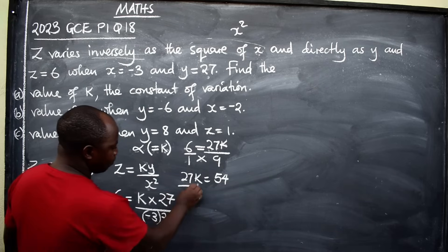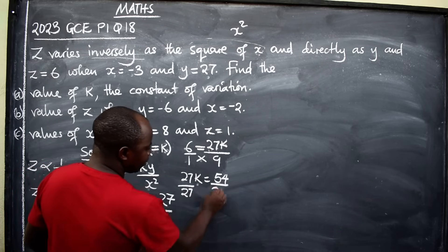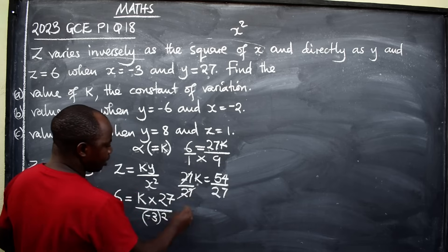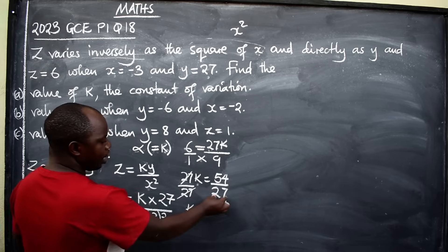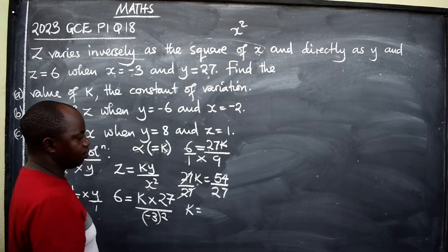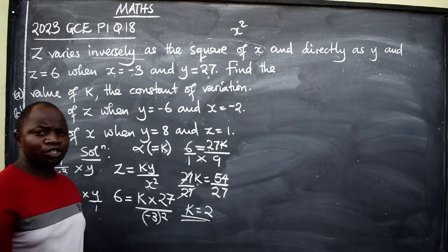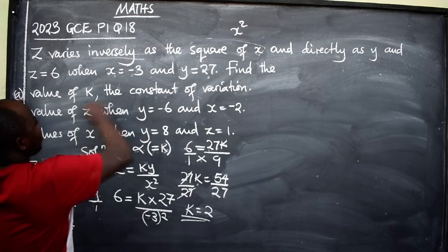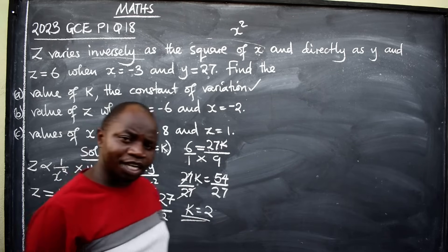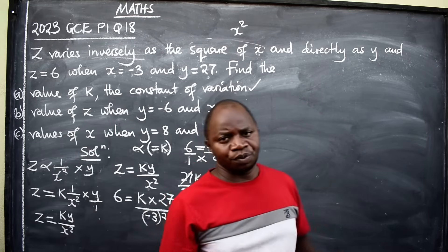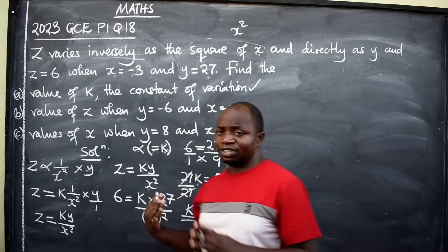To remain with k, divide by 27 both sides. Cancel this. k is equal to, how many 27s are in 54? That will be 2. So k is 2. You have answered the first part. The constant of variation is 2. Our k is 2.